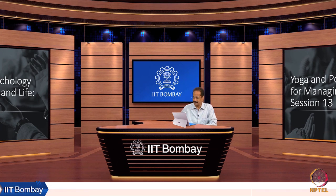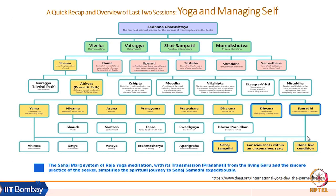This is the diagram. In the previous session we talked about the sadhana chatushtay — the fourfold spiritual practice — as described in the Tatvabodha of Shri Adi Sankaracharya. We discussed Satasampatti and also Abhyas and Vairagya. In Satasampatti, we discussed Shama, Dama, Uparati, Titiccha, Shraddha, and Samadhan.